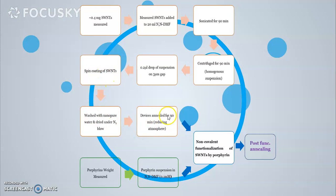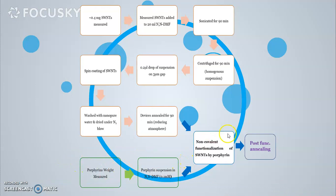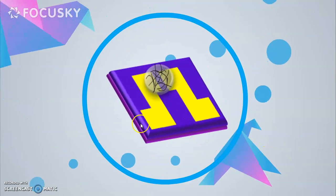Then the devices were finally prepared by annealing process. After that, the porphyrins were coated on the fabricated sensor. After functionalization, post-functionalization annealing was done to have stiff contact with the electrodes.